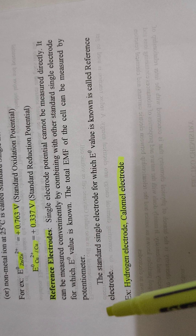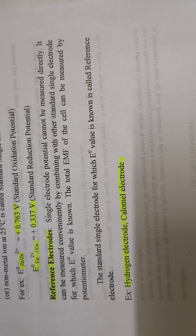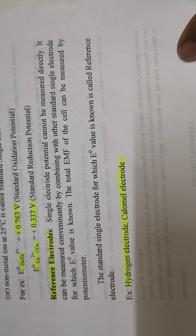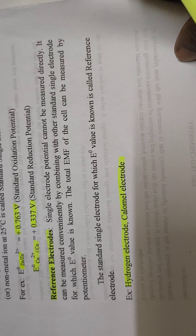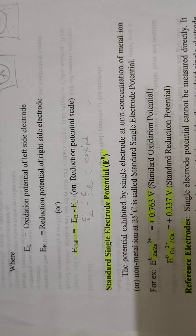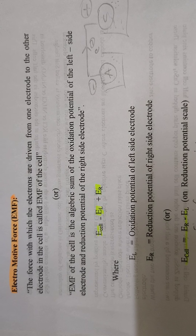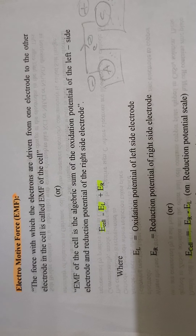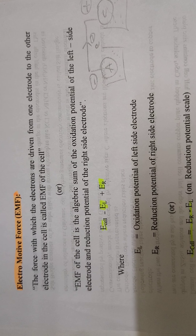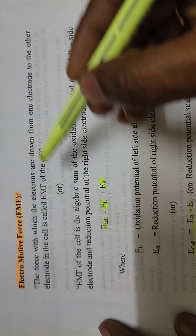In general, all standard single electrode potentials are calculated by connecting with the normal hydrogen electrode — also called the standard hydrogen electrode. The electrode whose oxidation potential or reduction potential is already known is called the reference electrode. The best examples of reference electrodes are the hydrogen electrode and the calomel electrode.